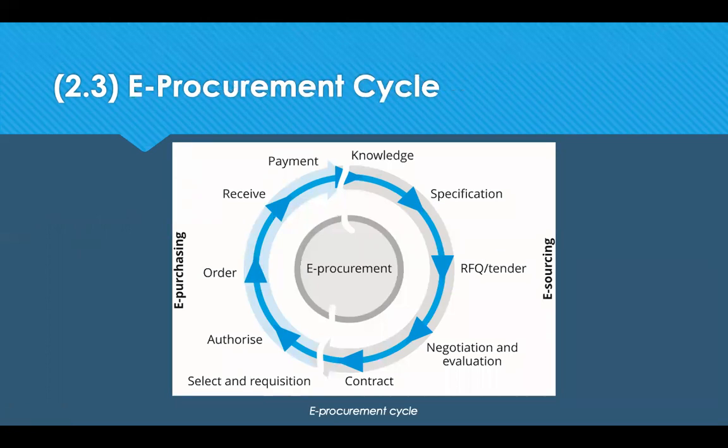Everything we've spoken about can actually be done electronically. E-procurement, e-sourcing, e-purchasing — anything with the letter E in front of it refers to the process being electronic. The e-sourcing tasks at the front end include storing knowledge, creating the specification, running the tender or quote, negotiating and evaluating, and then agreeing who to award the contract to. E-purchasing tasks carried out electronically include selecting and requisitioning, authorising orders, sending orders, receiving and receipting them onto your system to confirm goods have been received, and finally paying your suppliers.